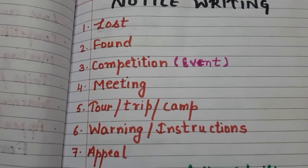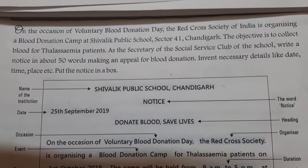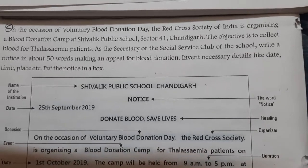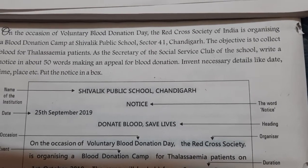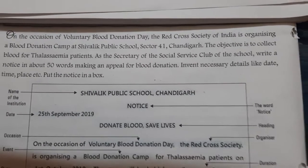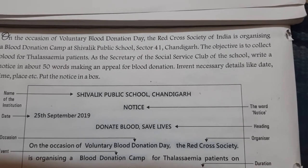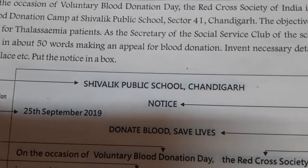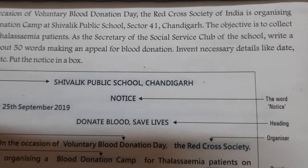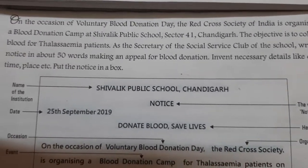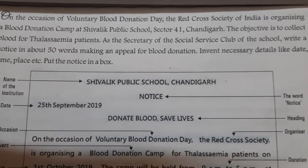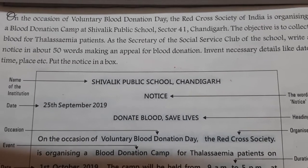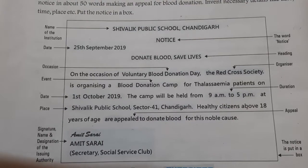I am going to give you an example of appeal. On the occasion of voluntary blood donation day, the Red Cross Society of India is organizing a blood donation camp at Shivalik Public School, Sector 41, Chandigarh. The objective is to collect blood for thalassemia patients. As a secretary of the social service club of the school, write a notice in about 50 words making an appeal for blood donation. Invent necessary details like date, time, place, etc. Put the notice in a box. See it carefully.